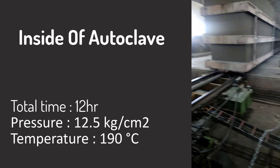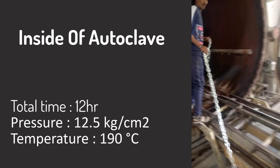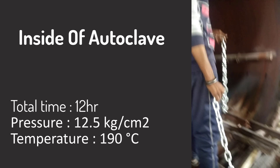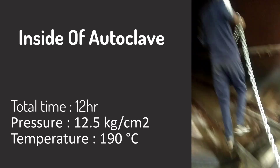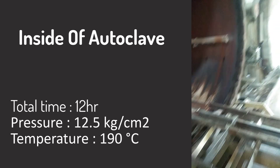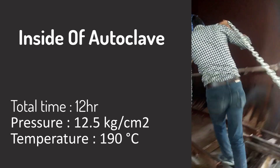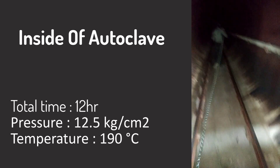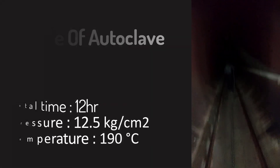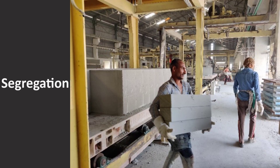Initially, for three hours the pressure increases steadily up to 12.5 kg per centimeter square, then remains constant for the next six hours. In the final three hours, the pressure decreases steadily. Throughout the whole process, the temperature is kept constant at 190 degrees Celsius. The blocks are then segregated according to their size and transferred to the storage yard.